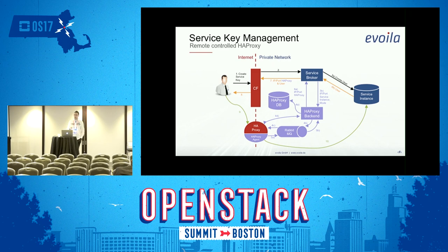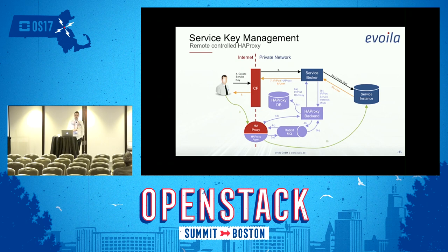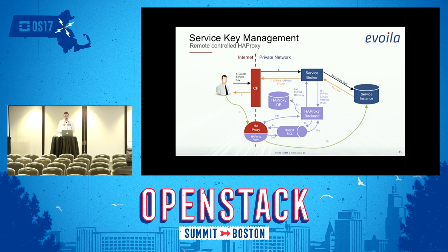What's also worth noting is that you see one service broker but four components to introduce to your stack. However, the HA Proxy backend and HA Proxy can be reused across different service brokers — you can have a whole bunch of service brokers using the same HA Proxy backend and the same HA Proxy, managing different services going through from another network. And that's why we use RabbitMQ, as we'll see.